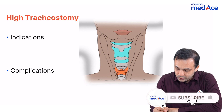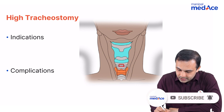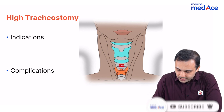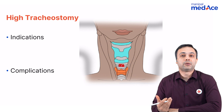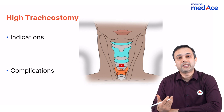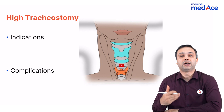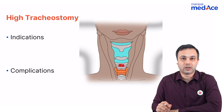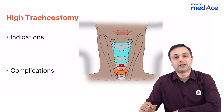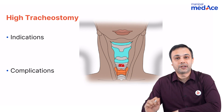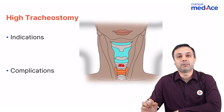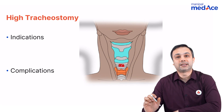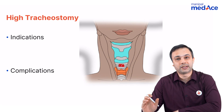What is high tracheostomy? You take out the first tracheal ring. When you have to do a high tracheostomy, it becomes very easy to do a laryngectomy at a lower level later on. The most important complication of doing a high tracheostomy is subglottic stenosis.